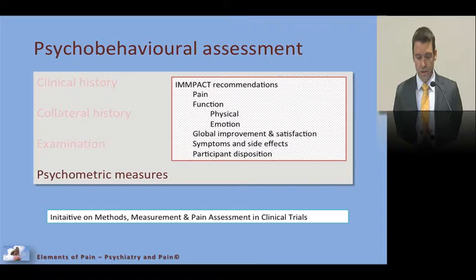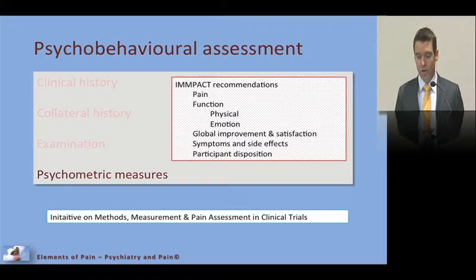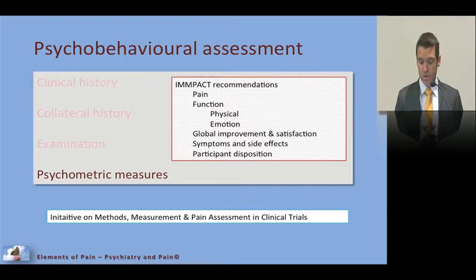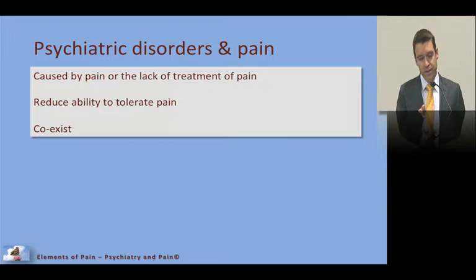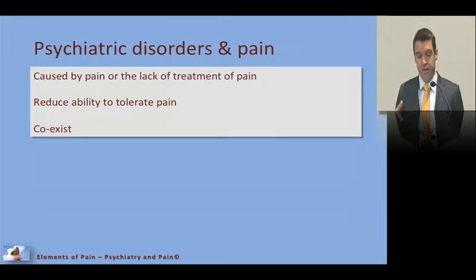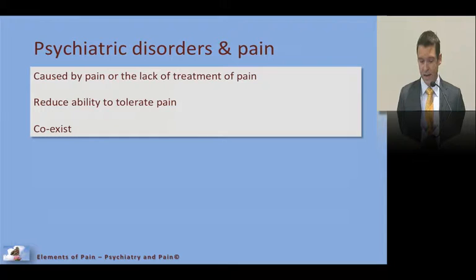There are many psychometric measures available, discussed elsewhere. A key current framework is the IMMPACT — Initiative on Methods, Measurement and Pain Assessment in Clinical Trials — which recommends seven core domains. Psychiatric disorders and pain have a complex relationship: pain can cause psychiatric disorders, psychiatric disorders can reduce pain tolerance, and they can coexist — which is why having a handle on psychiatric problems is so important.